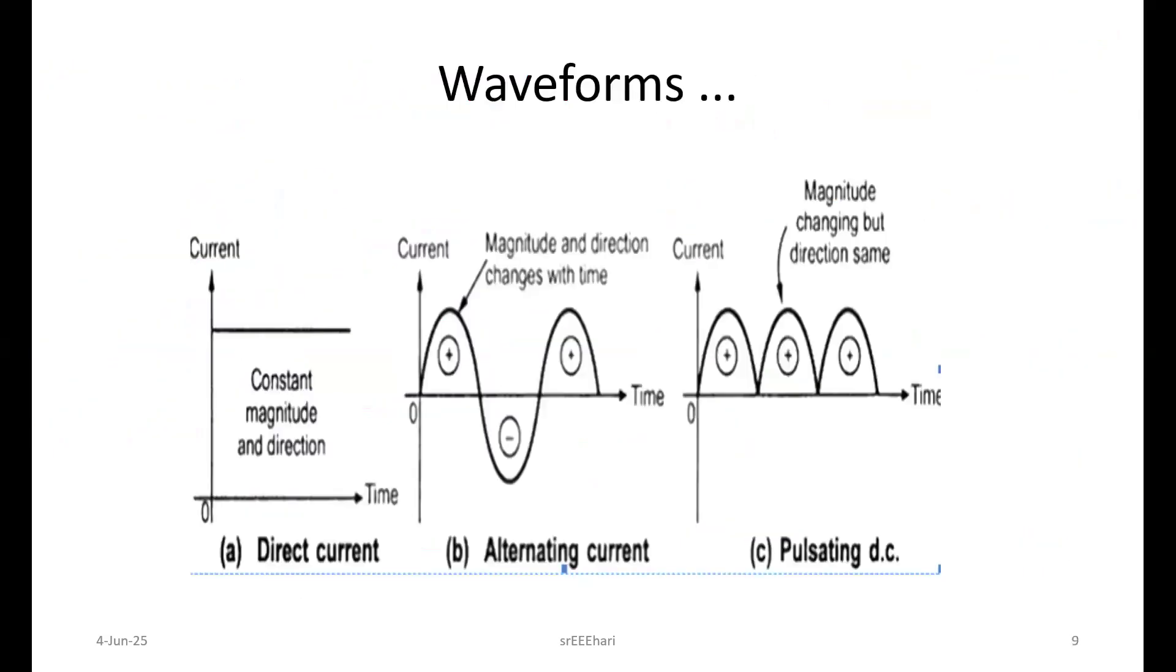Coming to AC waveforms, we have some first waveform is DC. There is no variation with respect to time. This one will vary with respect to time. This one is alternating and this one is pulsating. We come across this in the interactive class.